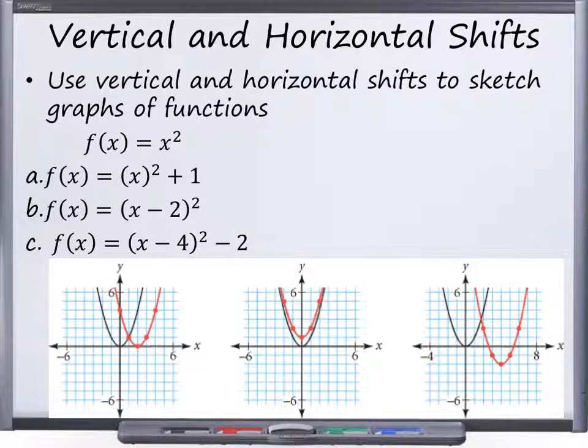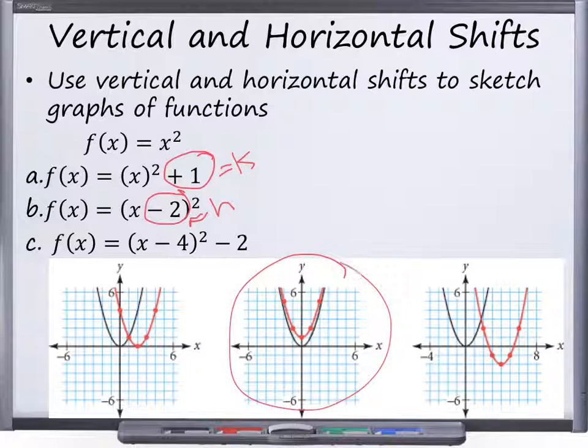Okay, vertical and horizontal shifts. This is your a, h, and k. When it's outside of the function, it's k. When it's inside the function, it's h. So outside the function, if it's k, then it's going to move up 1. So it would be this one.